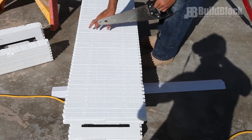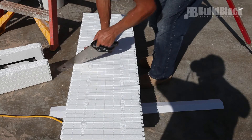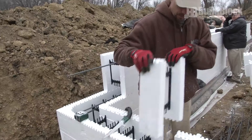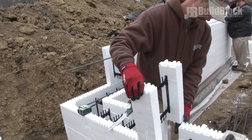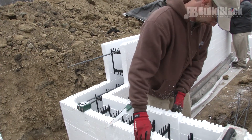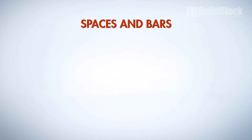This method not only describes the length of a cut, but also ensures that when cut, the spacing will be consistent, keeping webs aligned properly. The Spaces and Bars Method uses three sets of numbers. For this video, we will use the example 2-4-2.